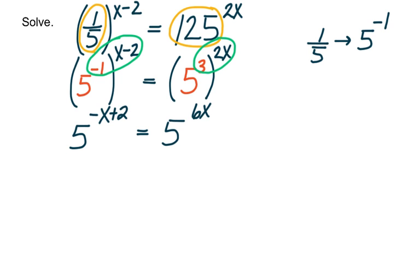Now, according to the uniqueness property, once the base on the left is the same as the base on the right, then we can go ahead and set our exponents equal to one another. So now we just have the equation negative x plus 2 is equal to 6x.